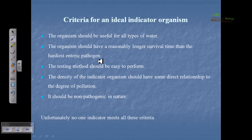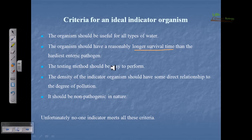Now, what are the criteria for an ideal indicator organism? The first criterion is that the organism should be useful for all types of water. Second, the organism should have a reasonably longer survival time to give us time to study it. Third, the testing method should be easy to perform on those organisms, because everything will be in vain if we cannot test or verify our hypothesis.